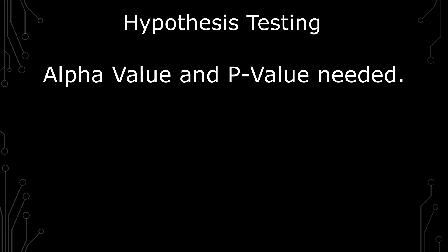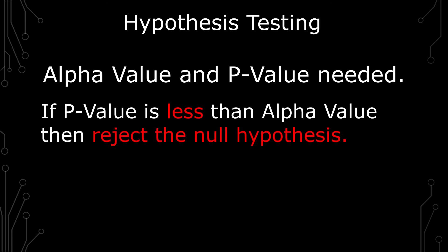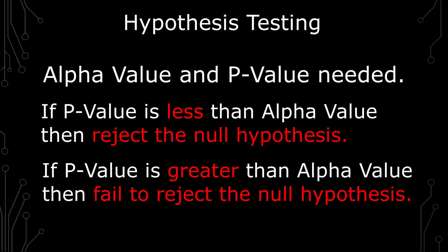If the p-value is less than the alpha value, you reject the null hypothesis. If the p-value is greater than the alpha value, then you fail to reject the null hypothesis.